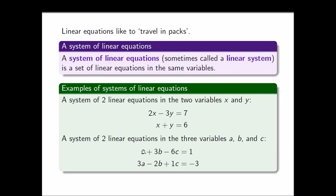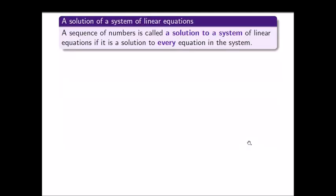In the second example, there are two equations but three variables involved. Both equations are in a, b, and c, so this is a system of two linear equations in the three variables a, b, and c. A sequence of numbers is called a solution to a system of linear equations if it is a solution to every equation in the system.